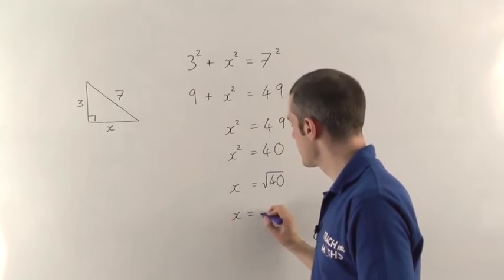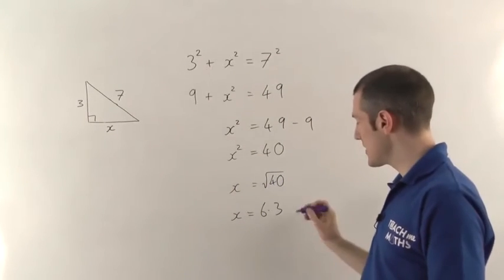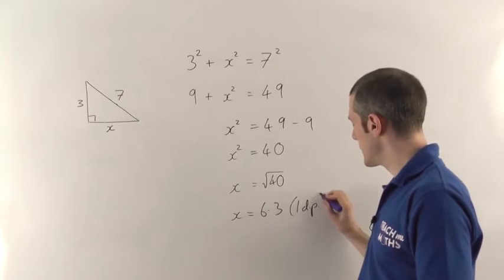So this time, the length of the shorter side here needs to be 6.3 centimetres. Again, I've rounded that to one decimal place.